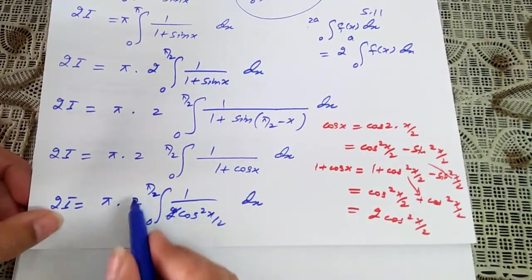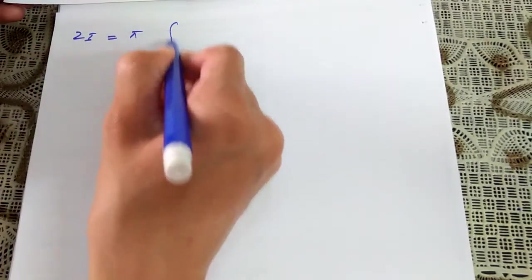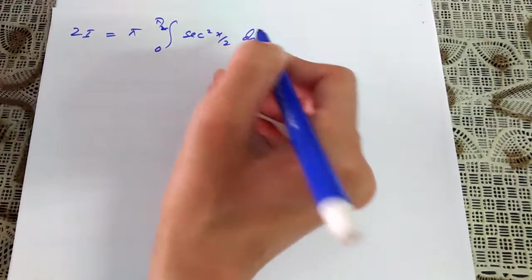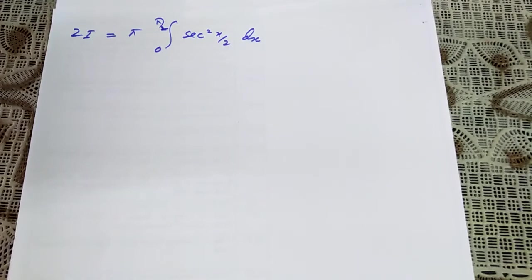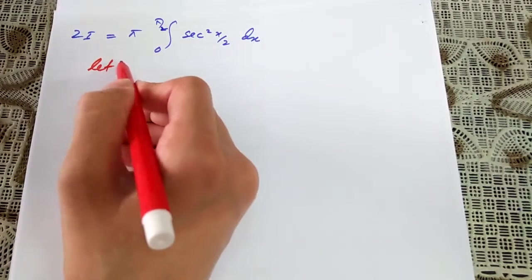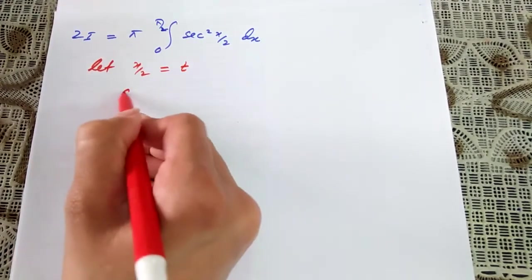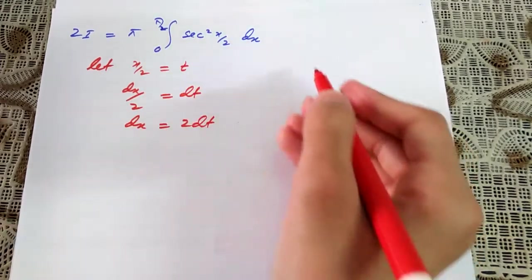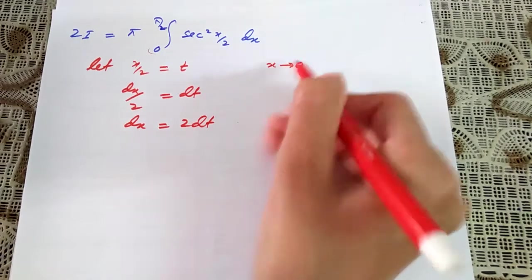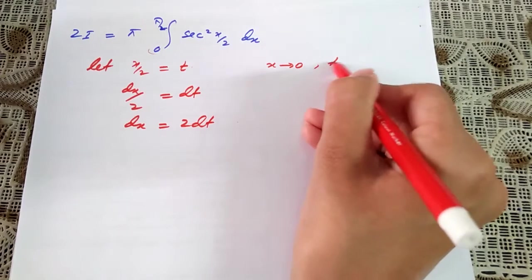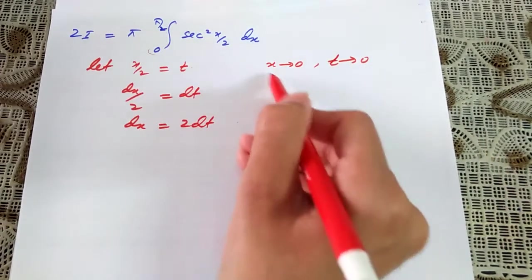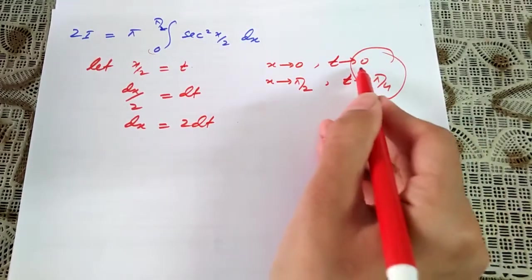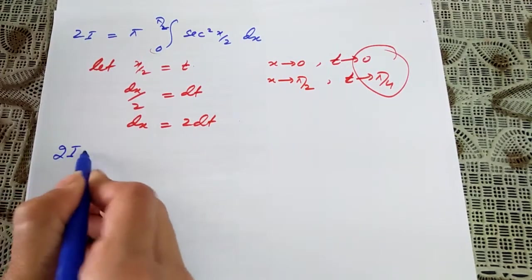The two in the numerator and denominator cancel, giving 2i equals π times the integral from 0 to π/2 of sec²(x/2) dx. For the integration, I use the substitution x/2 equals t, so dx/2 equals dt, meaning dx equals 2 dt. Changing the limits: when x approaches 0, t approaches 0; when x approaches π/2, t approaches π/4. So the limits become 0 to π/4.